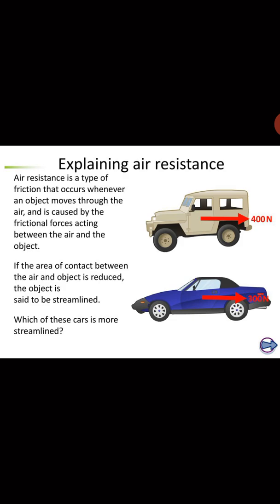Streamlined means it is narrowing — tapering like the body of a fish. Because the front part is tapering and streamlined, the area facing the air movement is less, so the air resistance will be less. Here the air resistance is 300 Newtons. That is why racing cars are streamlined — because if they are streamlined, air resistance will be less, opposing the motion less, so the speed of the object can be more.